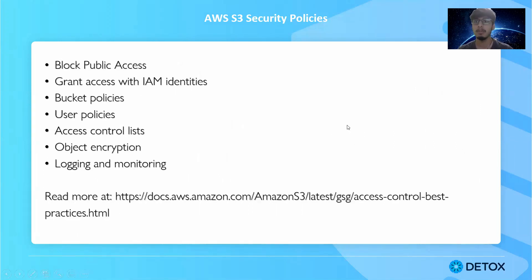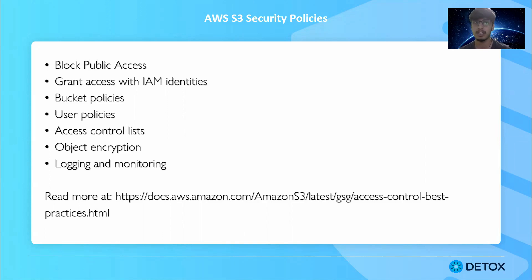AWS S3 implements a lot of security policies. The first is block public access — as soon as you create an S3 bucket, public access is disabled or blocked by default. Nobody can publicly access it. Sometimes an organization wants the S3 bucket to be accessible remotely for their own applications or logic.